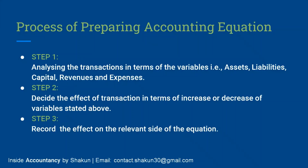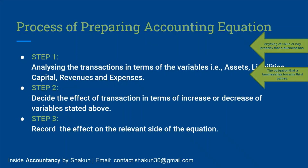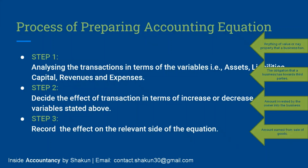First, see whether the transaction affects an asset, a liability, capital, revenue, or expenses. Assets means anything of value or any property the business has. Liabilities is the obligation the business has towards third parties. Capital is the amount invested by the owner into the business. Revenue is the amount earned from the sale of goods. Expenses are the costs incurred in order to generate revenue.